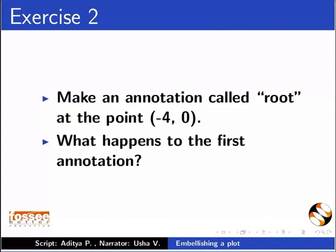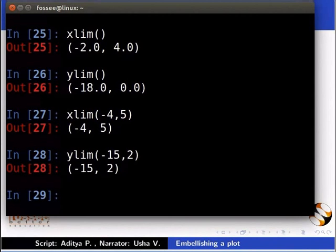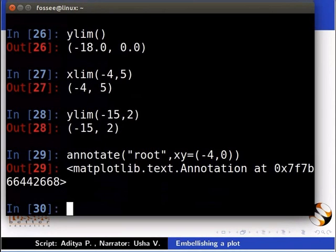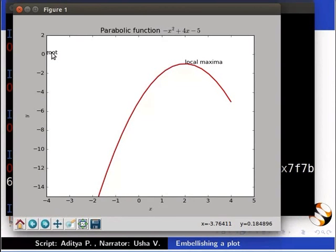Switch to the ipython console for the solution. Type annotate inside the brackets inside inverted commas root comma xy is equal to minus 4 comma 0. Every annotate command makes a new annotation on the figure.